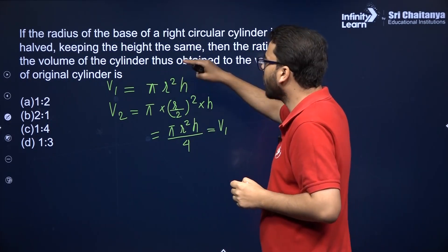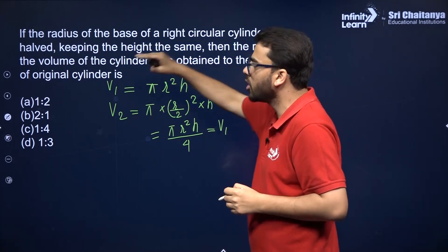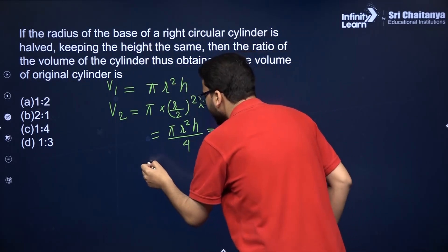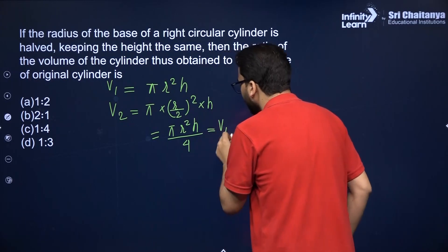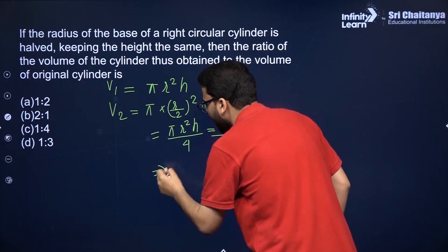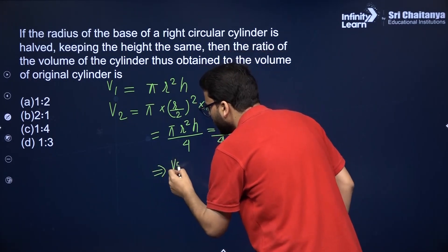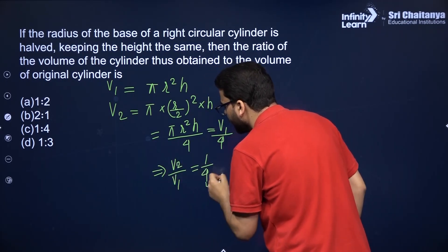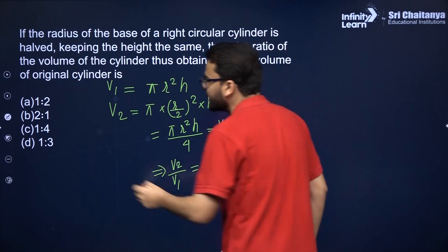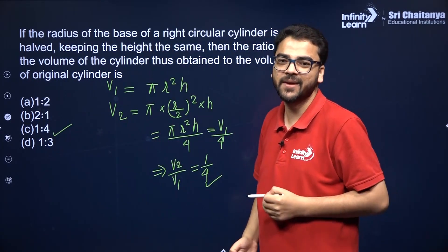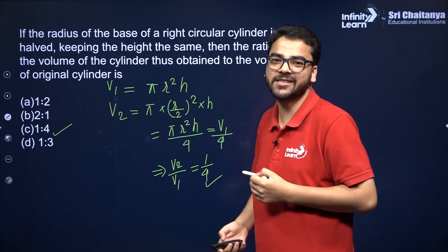You have to find the volume of the cylinder thus obtained to the volume of the original cylinder. So it means the ratio is 1 is to 4. The answer is 1 is to 4. I hope it is clear to you. Let's take the next question.